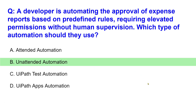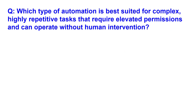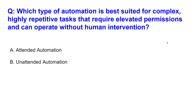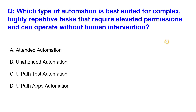Let's face one more question: which type of automation is best suited for complex, highly repetitive tasks that require elevated permissions and can operate without human intervention? As covered in the documentation, the answer should be pretty clear — please comment your answer. The correct option is B.